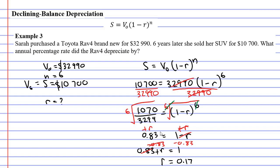So it looks like we've finished. Just remembering this is as a decimal. We need to rewrite it as a percentage. So 0.17 is the same as 17% or 17% per annum. So our RAV4 has depreciated by 17% per annum.